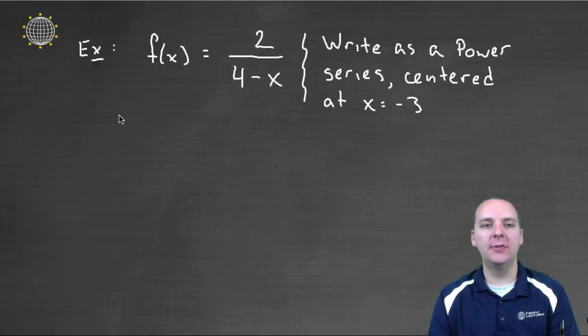In this example we're trying to take this function 2 over 4 minus x and express it as a power series. Now the first thing that jumps out to me right off the bat is that this closely resembles a over 1 minus r and that's a geometric power series.